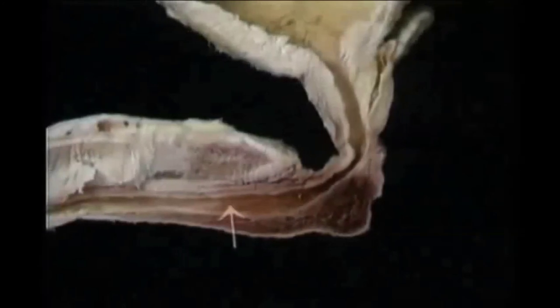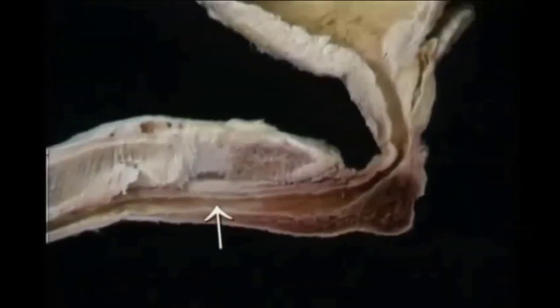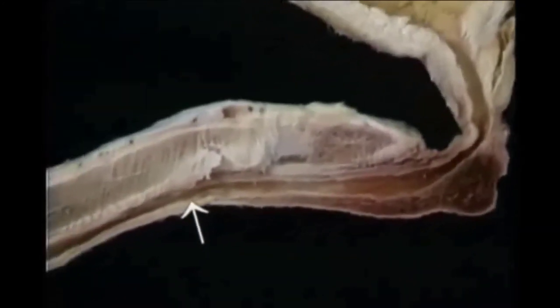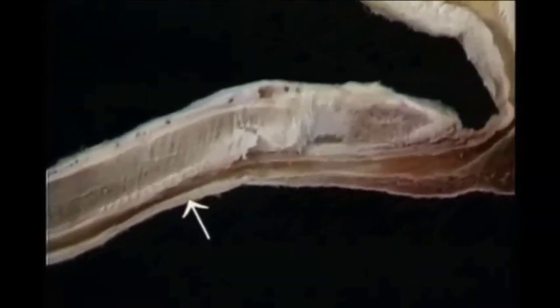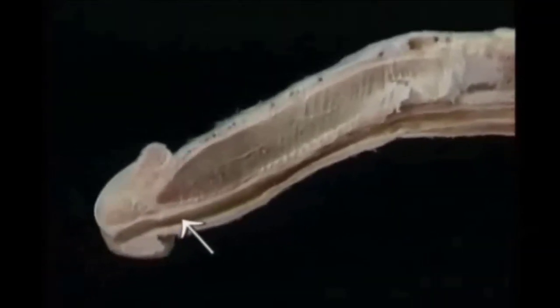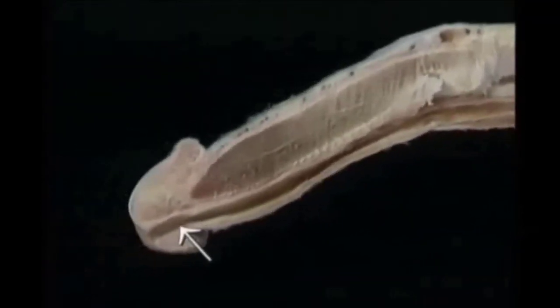The penile urethra passes along the corpus spongiosum and through the glans, ending at the external urethral meatus.